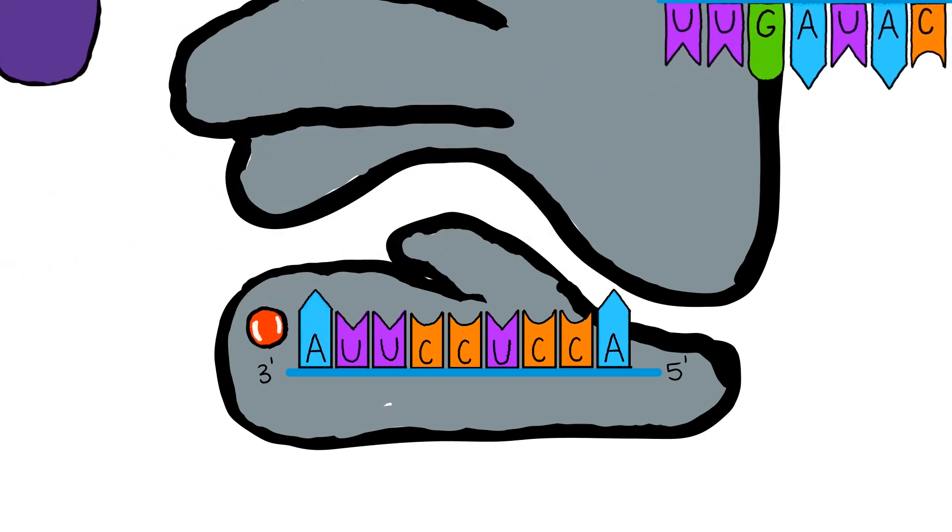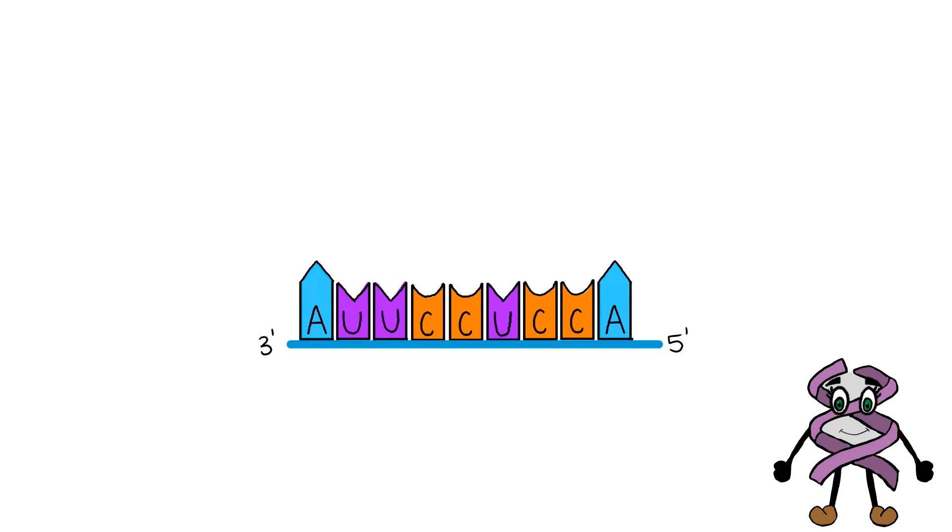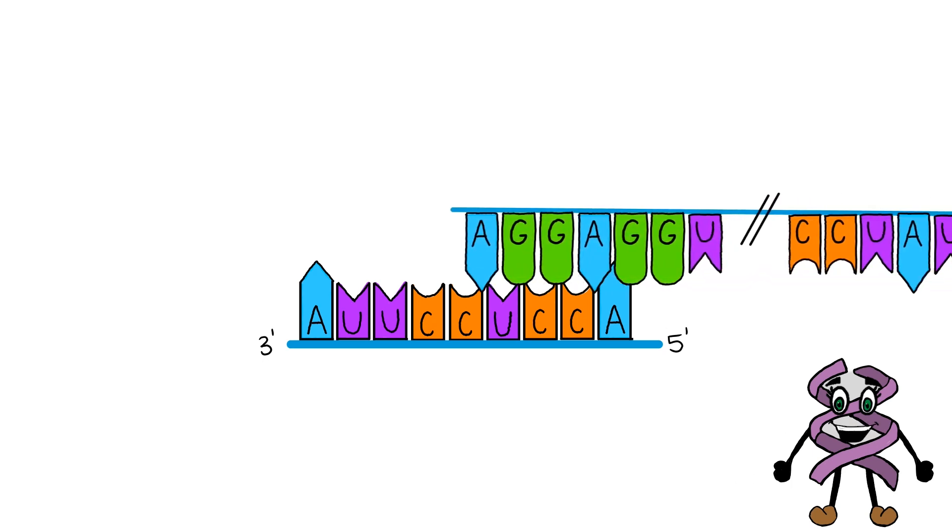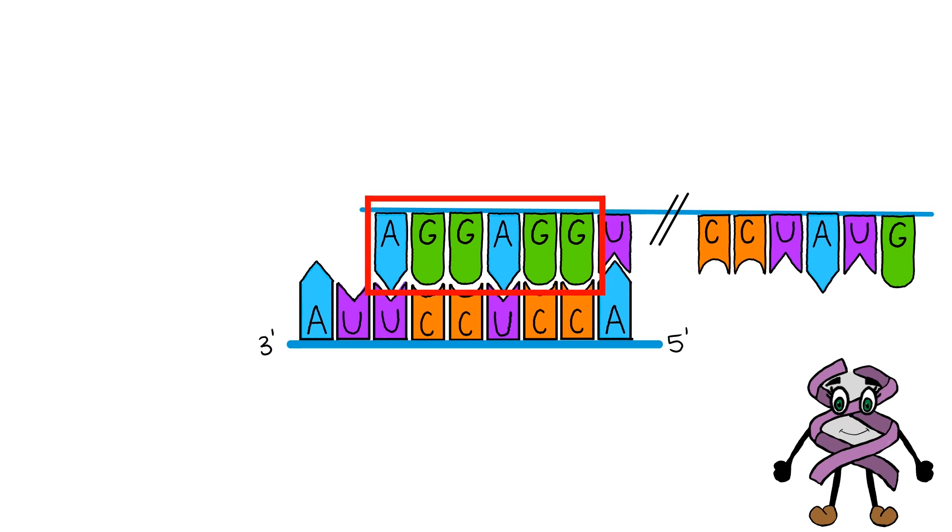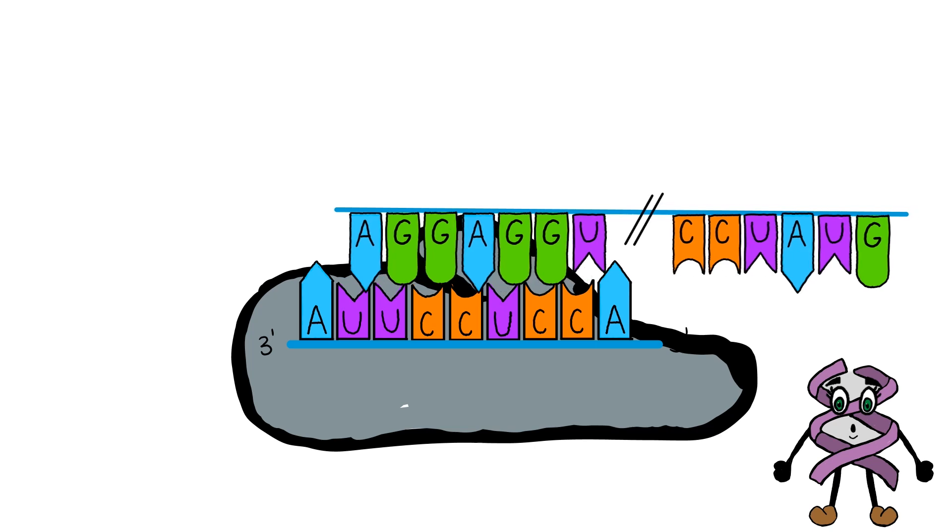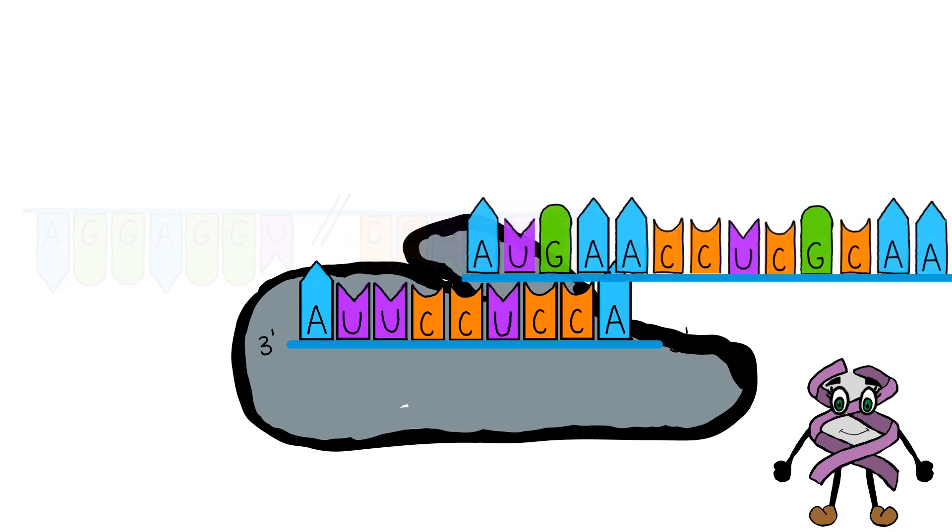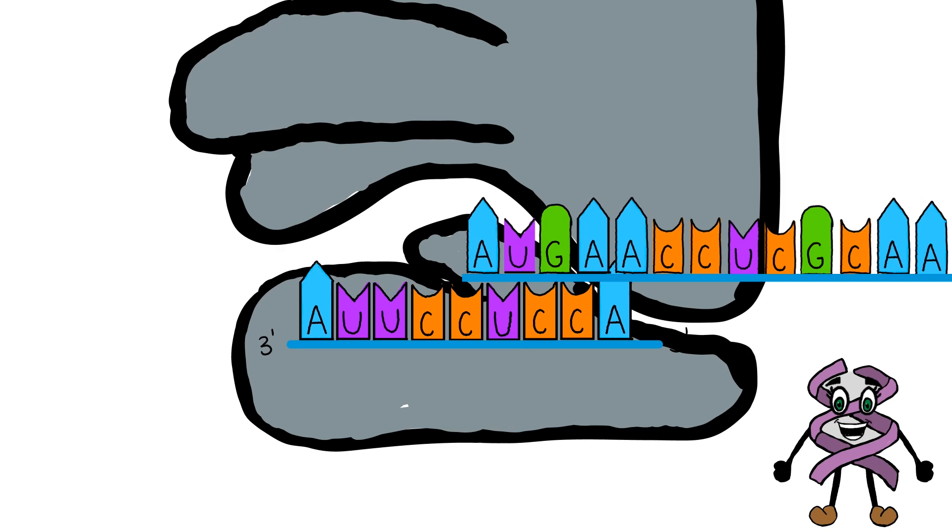Later research, inspired by Shine and Dalgarno, suggested this region of rRNA is also involved in translation initiation. The five prime untranslated region of mRNA for a number of genes had the sequence AGG-AGG. This region lies upstream of the AUG start codon and possesses complementation to the Shine-Dalgarno sequence. Thus, the suggestion came that the Shine-Dalgarno sequence can play a role in the recognition of mRNA in translation initiation.